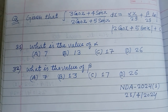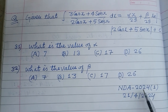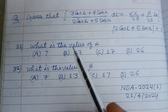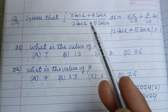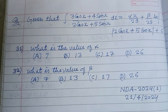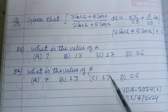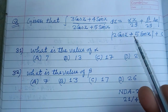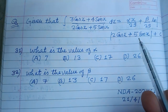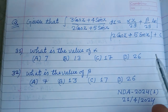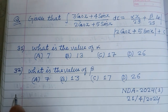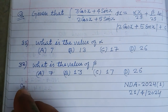Hello viewers, warm welcome to this YouTube channel. This question is from NDA 2024, held on 21st April 2024. Given that the integration of (3 cos x + 4 sin x) / (2 cos x + 5 sin x) equals alpha x upon 29 plus beta upon 29 ln |2 cos x + 5 sin x| + c. What is the value of alpha and beta?